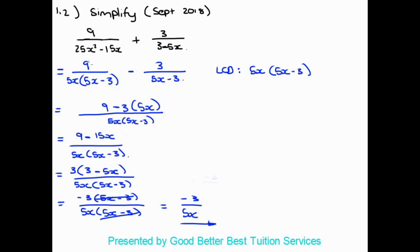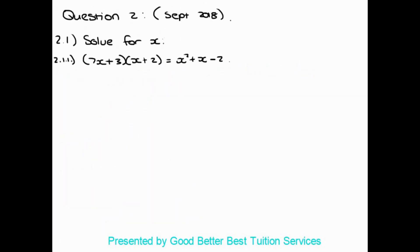To recap: we factorized the left denominator by taking out a common factor. We took out a negative from the right-hand side to get matching denominators. We found the LCD covering both denominators, divided through, multiplied what remained into the numerator, simplified by taking out 3, then took out a negative to match the brackets, cancelled them, and were left with minus 3 over 5x.